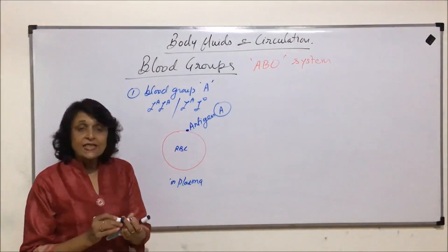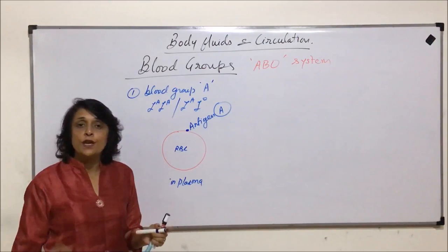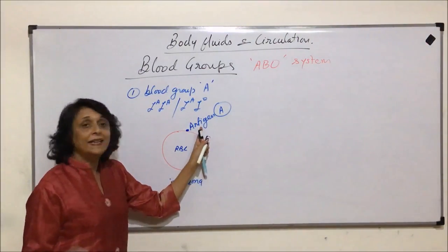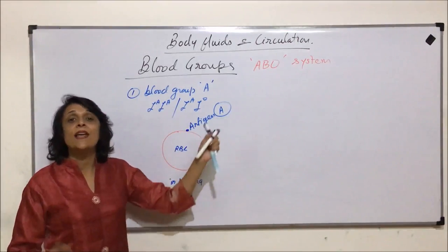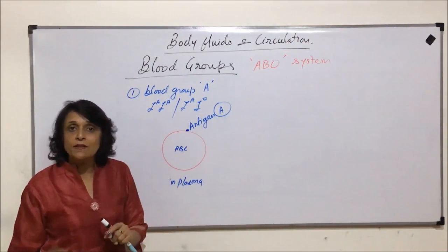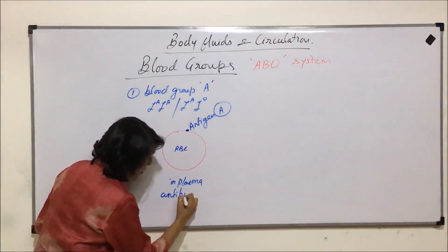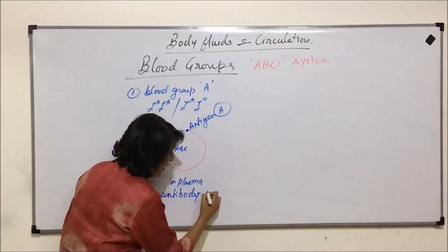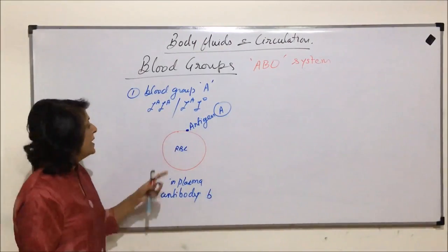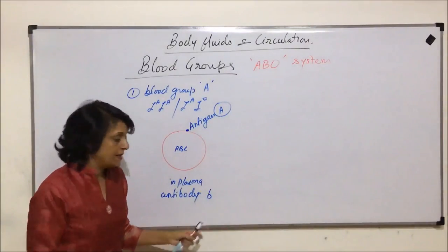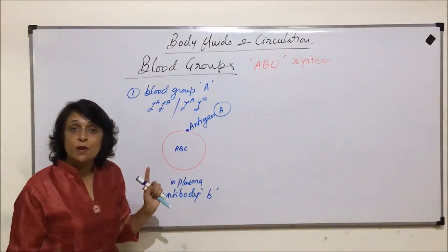Antigen A is present on the surface of the RBC. In the plasma of the same person are present antibodies — our natural defense in the immune system — which are capable of differentiating between self and non-self. Antigen A becomes 'self,' so the body doesn't destroy it. But if antigen B enters, the body should fight and destroy it. That is why in the plasma is present antibody b (anti-b). Antigens are written as capital letters and antibodies as lowercase.